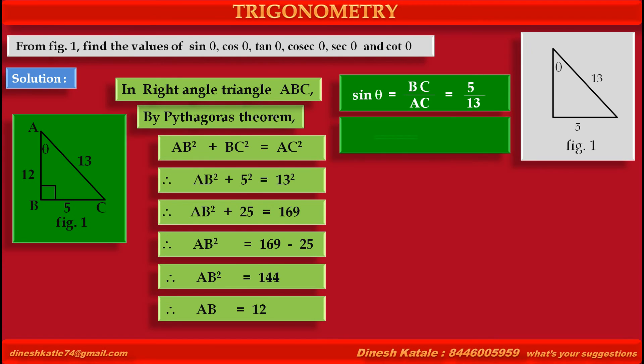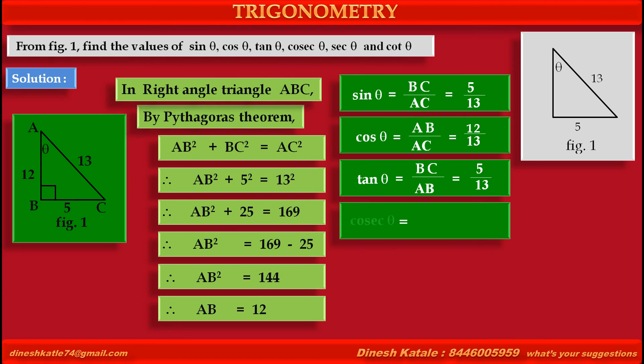Cosine theta is equal to adjacent side upon hypotenuse, i.e. AB upon AC, is equal to 12 upon 13. Tan theta is equal to opposite side upon adjacent side, i.e. BC upon AB, is equal to 5 upon 13.